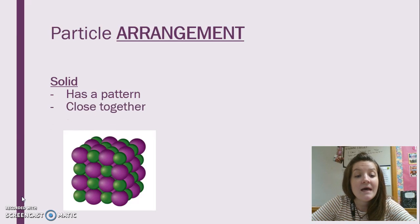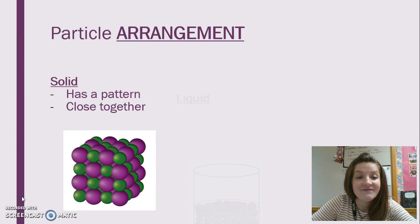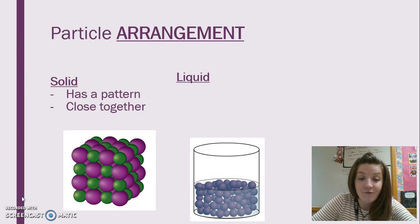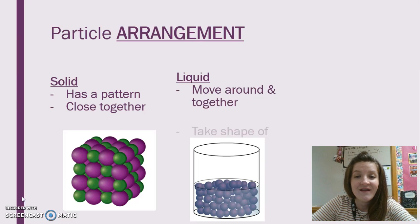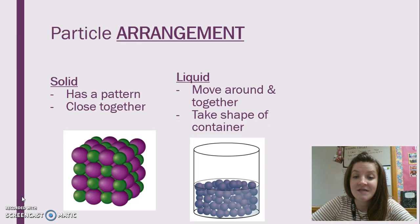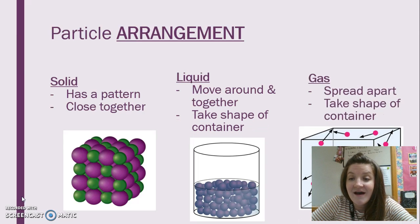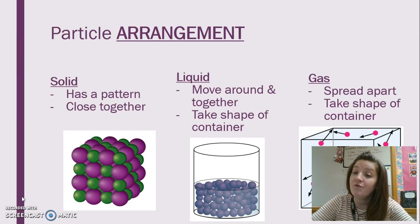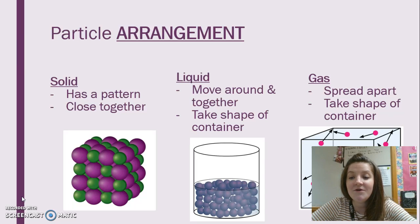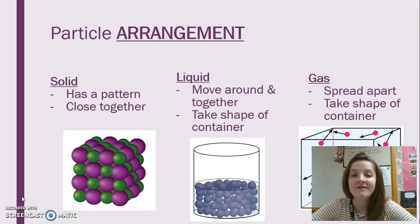They're tightly bonded, chemically interacting with one another. A liquid is different because the particles, while still close together, are able to move freely around one another, and they take the shape of their container. A gas has the least interaction between the particles because they're spread so far apart. They take the shape of their container as well, and they really don't interact with one another as much as a solid and a liquid does.